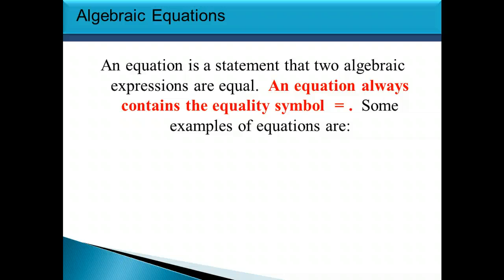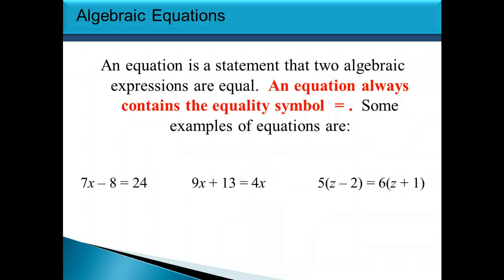Now let's take a look at algebraic equations. An equation is a statement that two algebraic expressions are equal, and it always contains the equality symbol — the equal sign. Some examples: 7x minus 8 equals 24, or 9x plus 13 equals 4x, or 5 times (z minus 2) equals 6 times (z plus 1). Those all say that one algebraic expression is equal to another — that's what an equation is.